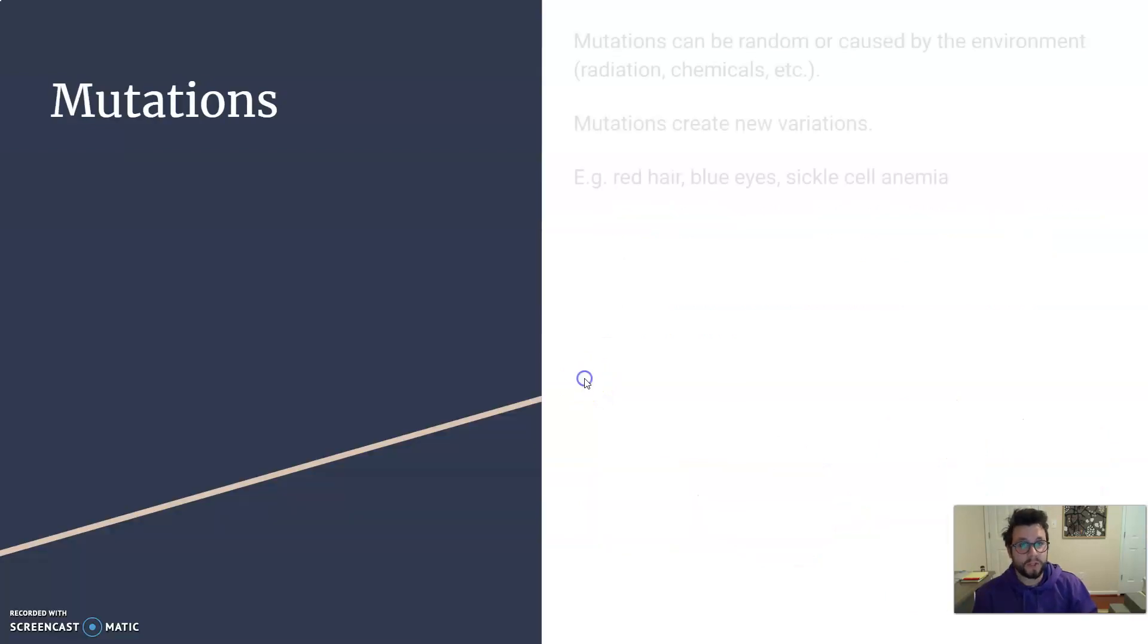There's also mutations. So mutations can be random. They're mostly random. They happen during DNA replication all the time. I think it can also be caused by the environment like radiation and chemicals. But mutations can create new variations. They create new genes, new alleles.